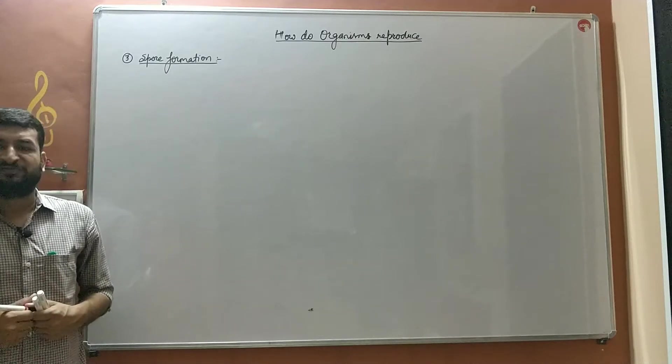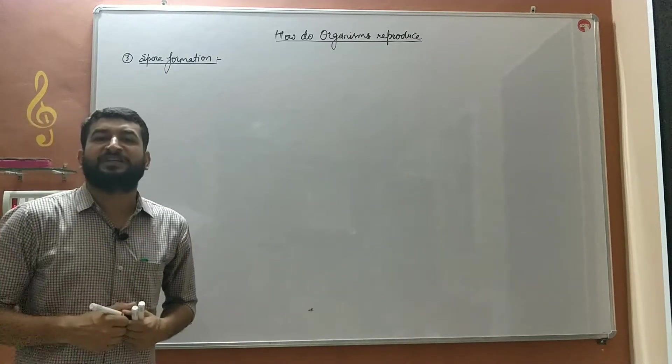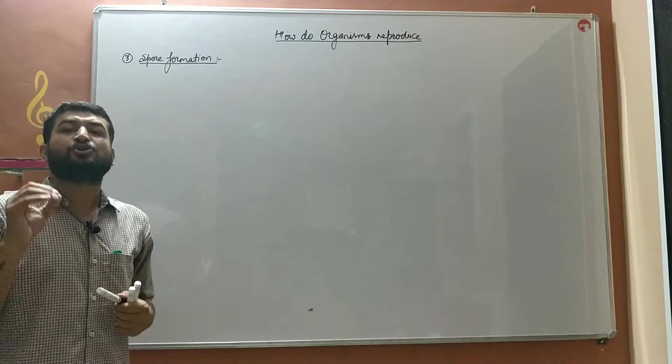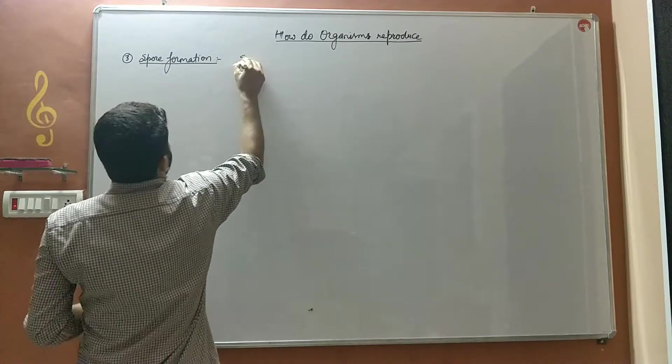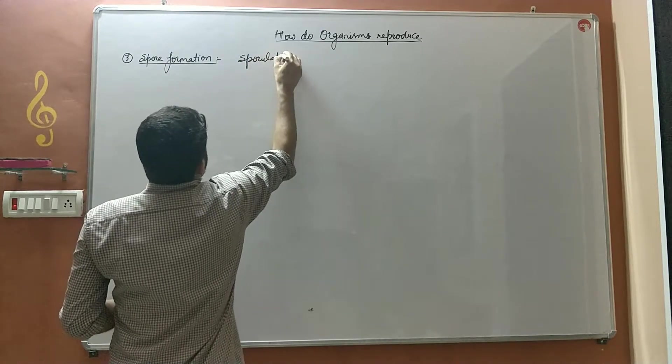In this video we will discuss the third mode of asexual reproduction that is spore formation. Spore formation is also known as sporulation.